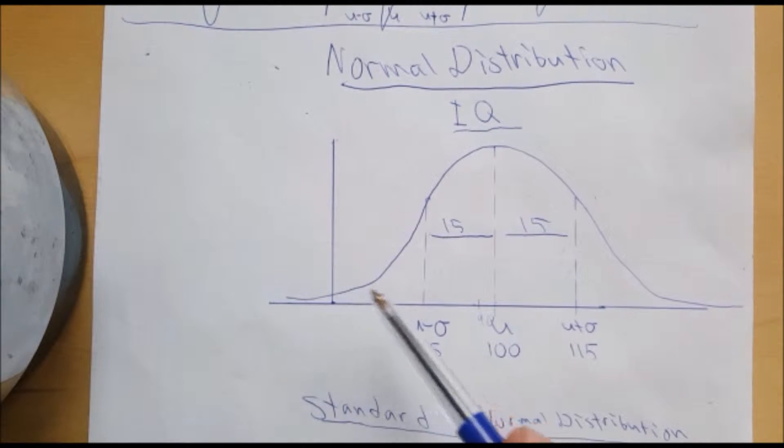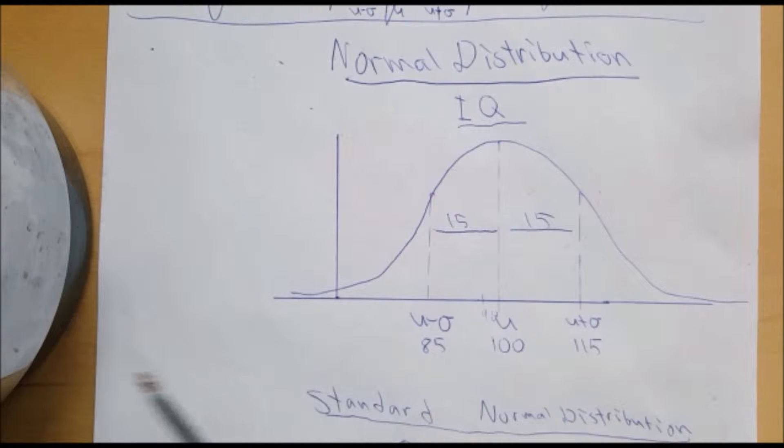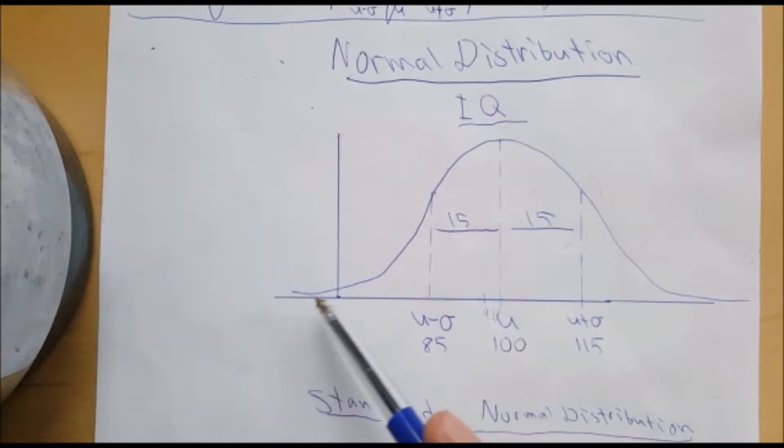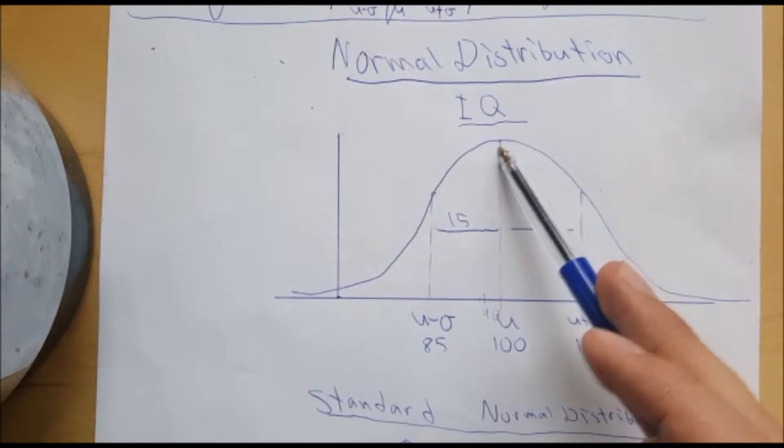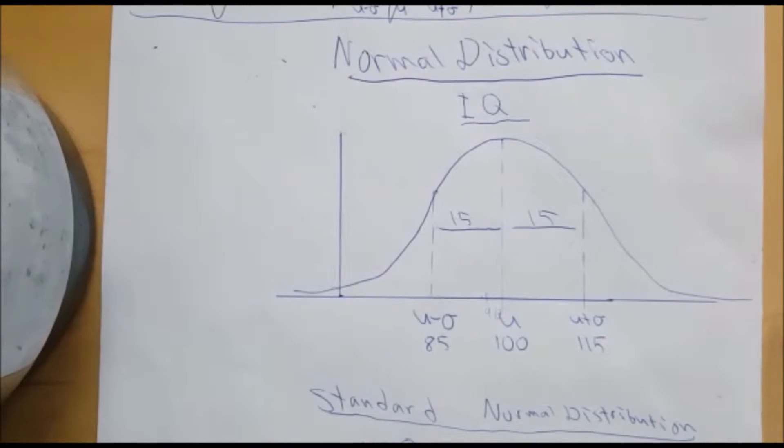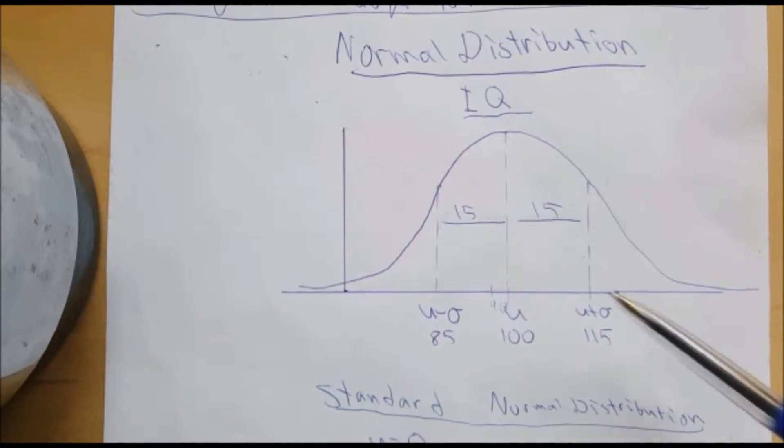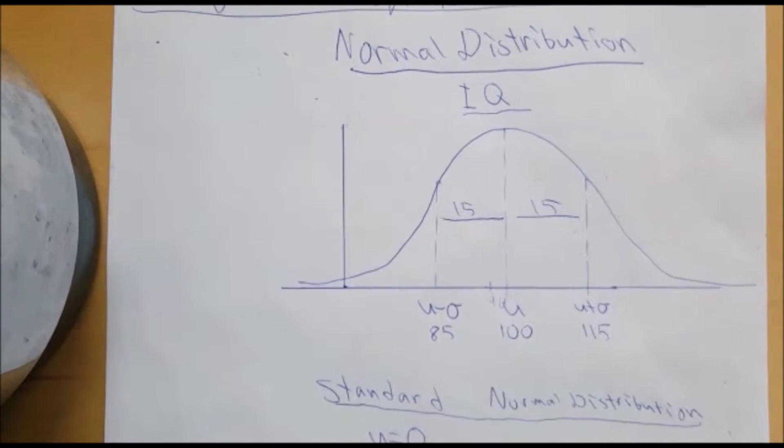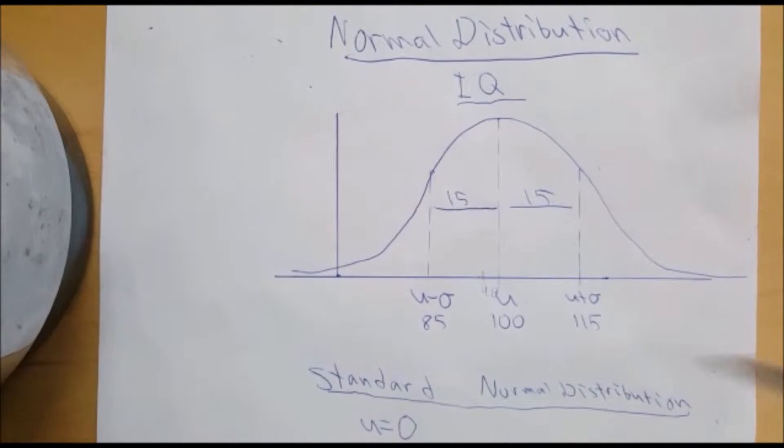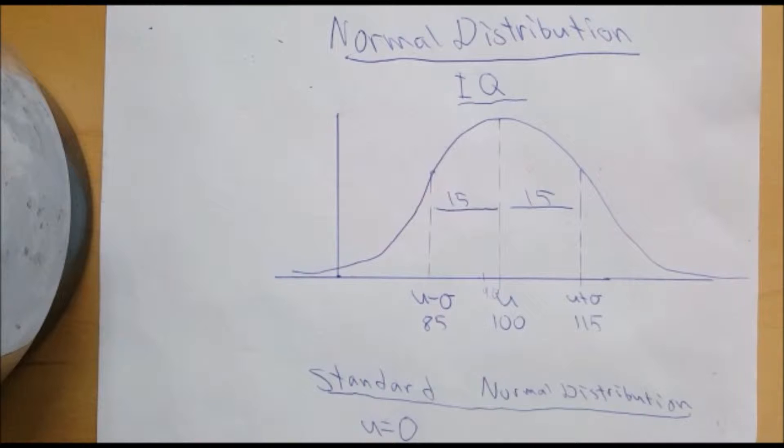So this is what a normal distribution curve looks like. It goes from negative infinity to its mean on the top and then all the way to positive infinity. It's symmetric and each normal distribution curve is identified by its mean and standard deviation.